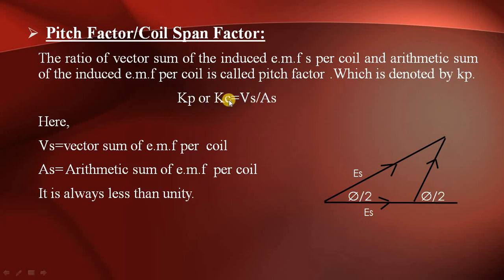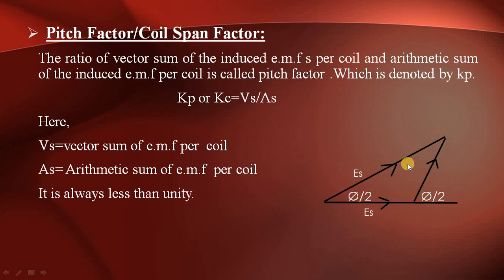There are two EMF quantities: the vector sum of induced EMFs per coil and the arithmetic sum of induced EMFs per coil. This factor is always less than unity. We have a diagram showing a triangle, where ESC is the EMF induced in each coil side, and the angle is π/2.